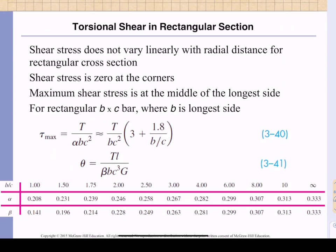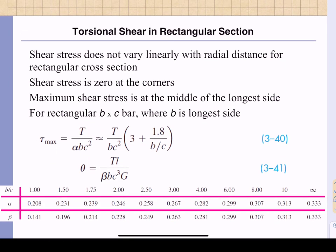But if we do have a rectangular cross section, and if b is the long side, as I just mentioned, so here's a rectangular cross section carrying a torque T, b is the long side, c is the short side. The maximum shear stress occurs at the middle of the long side. So the maximum shear stress occurs at the middle of the long side, that's the b side, and it is given by this equation right here.